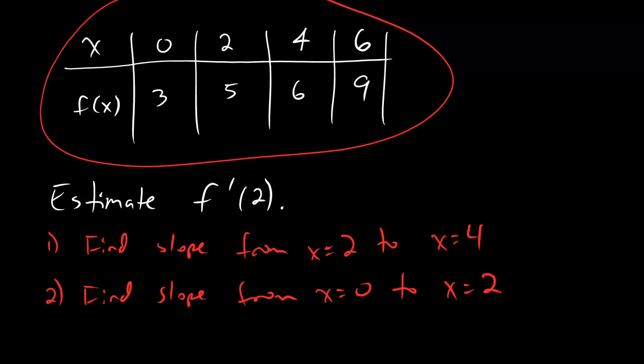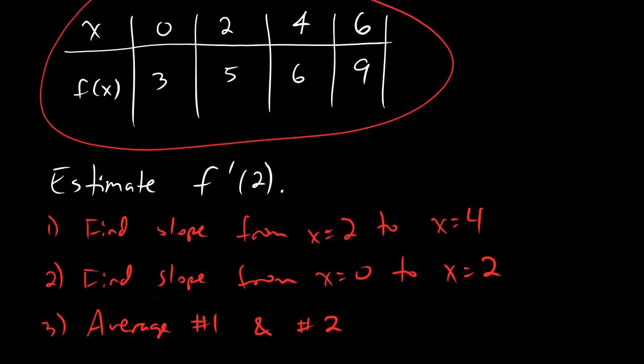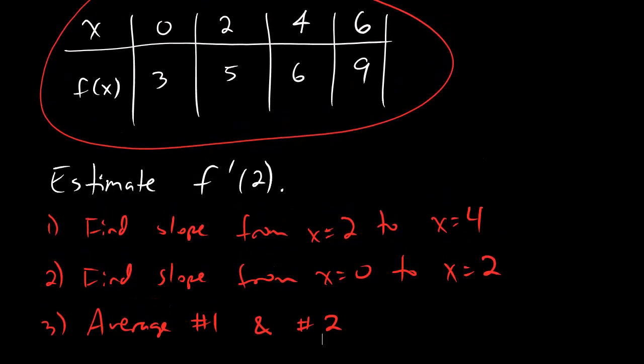Basically, in step 1, we move 1 to the right. In step 2, we move 1 to the left. We find these slopes, and then the last thing that we're going to do is average those two numbers together. And that's exactly what you do to estimate your derivative using a table.